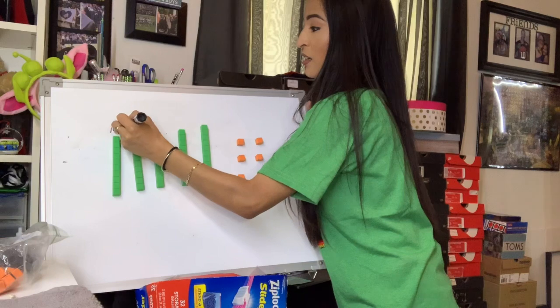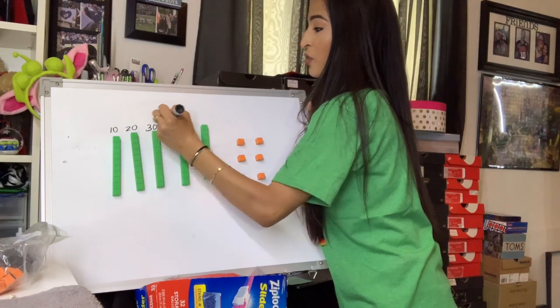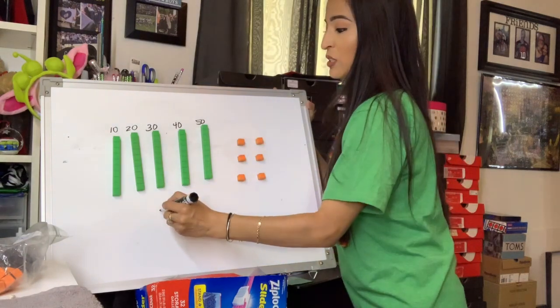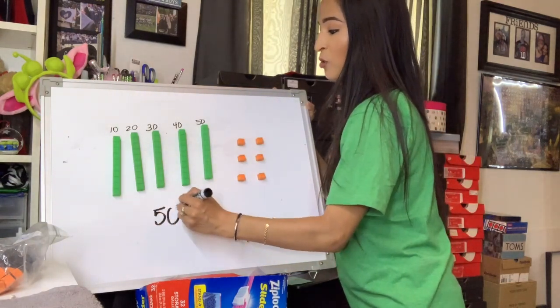So we can start with 10, 20, 30, 40, 50. So we know that in the tens place, we have a total number of 50.